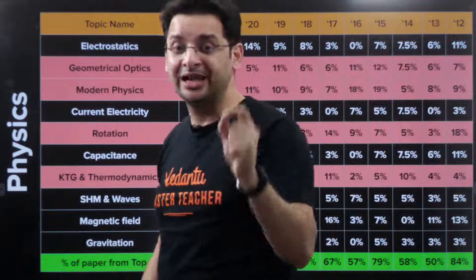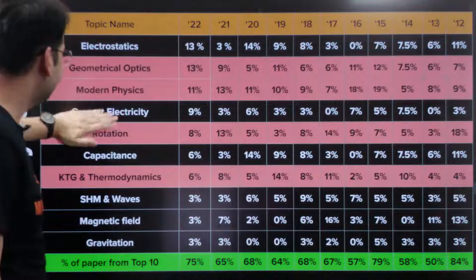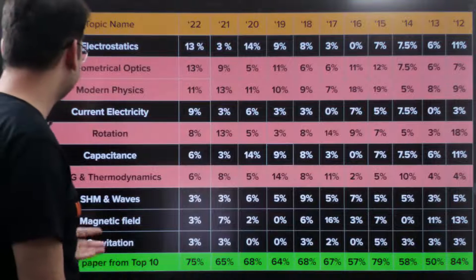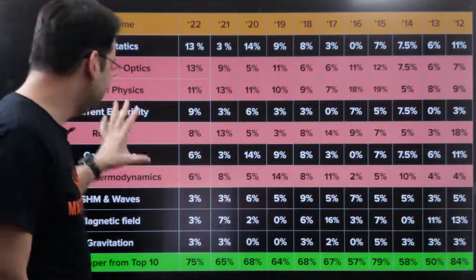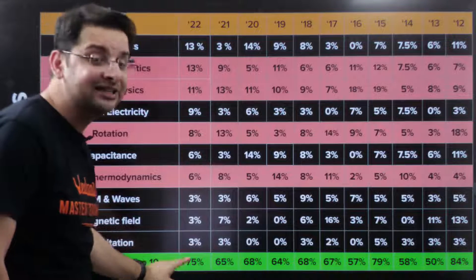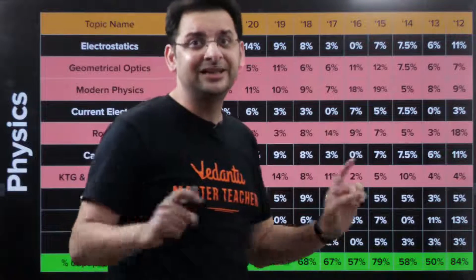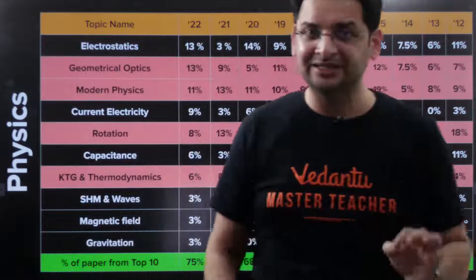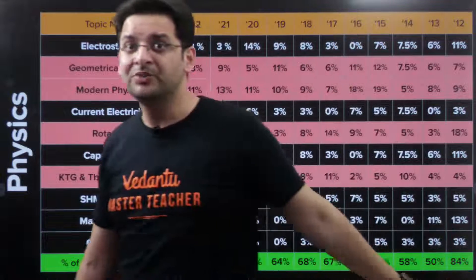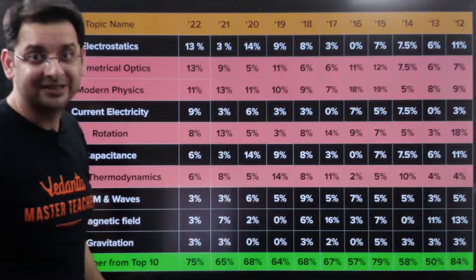Modern physics, 13%, 11%. So again, this percentage has always been very high. Modern physics is something that you cannot, cannot, cannot ignore. This is something which needs to be done. Current electricity, rotation, capacitance, KTG thermodynamics, SHM waves. These are good chapters, these are very important chapters. And some of these chapters at times have been contributing as high as 75% in 2022. Top 10 chapters out of almost 30 chapters.